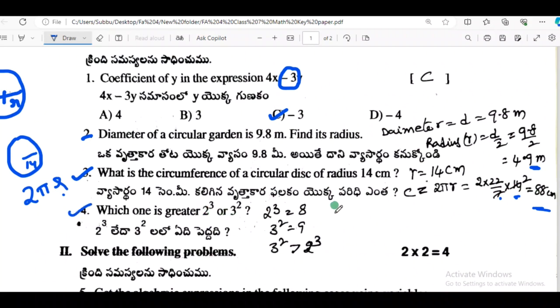So 2 cubed is 8, 3 squared is 9. So 8, 9, 9 is greater. 3 squared is more than 2 cubed.